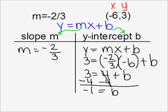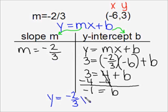So, to finish up the problem, we're ready to write our equation. Y is equal to our slope m, which is negative two-thirds for this line, times x, plus our y-intercept. We can write add negative one or we can simply write subtract one. So the equation of the line with slope of negative two-thirds and containing the ordered pair negative six, three is y equals negative two-thirds x minus one.